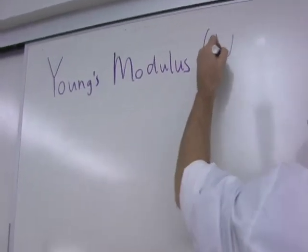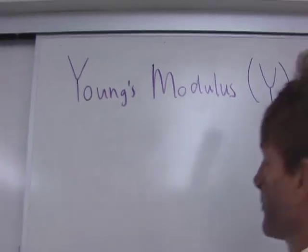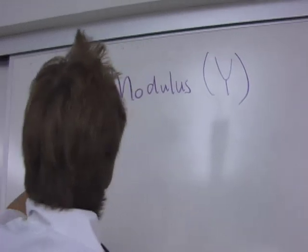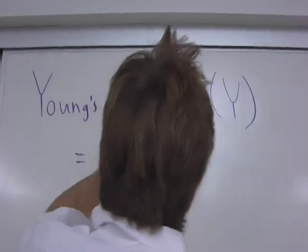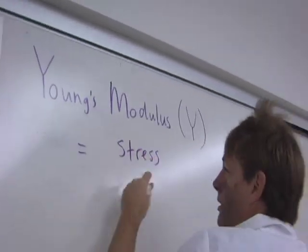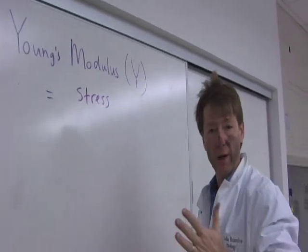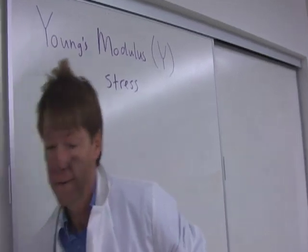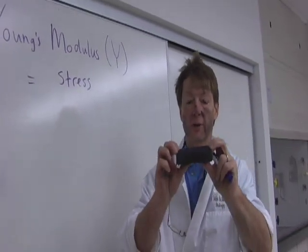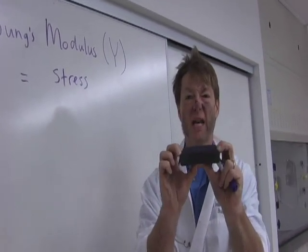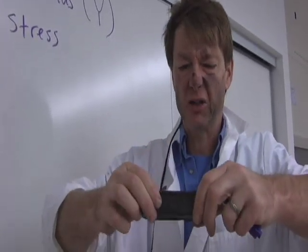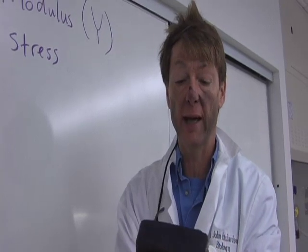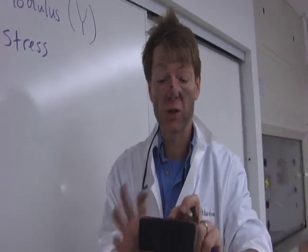Young's modulus is given by a big Y, and it's equal to the ratio of stress. Stress is if I apply a force over a certain area to something. I can stress this eraser - I can bend it, I can twist it, I can stretch it, I can press it. There are other ways of applying stress, and it's just force per area.